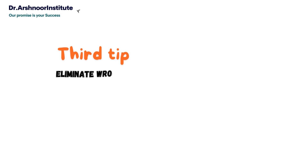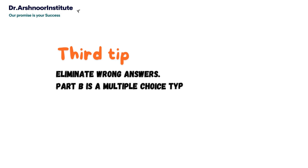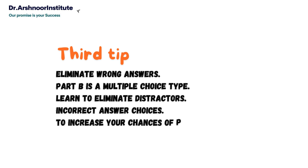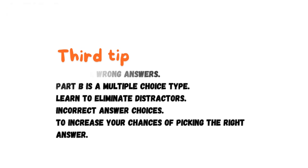Third, eliminate wrong answers. Part B is a multiple choice type. Learn to eliminate distractors — incorrect answer choices — to increase your chances of picking the right answer.